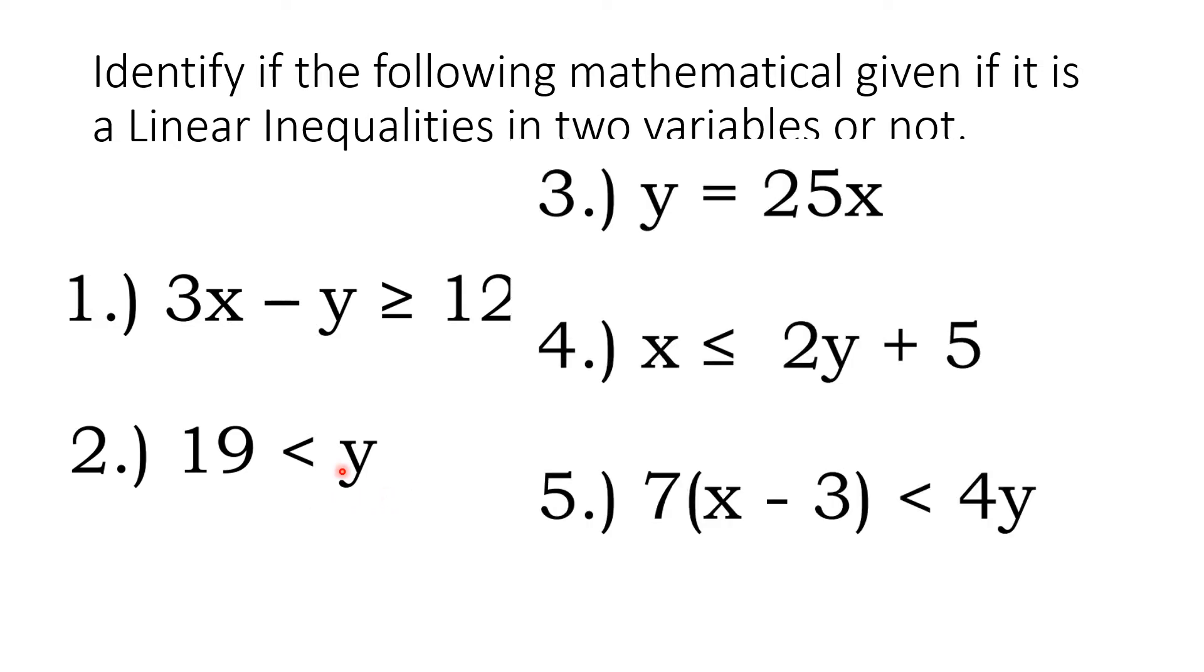How about 3 and 4 and 5? Number 3 has two variables. However, that's equal sign. So this is not considered as a linear inequalities in two variables. Number 4, that is an example. Two variables and an inequality sign. Number 5 as well.